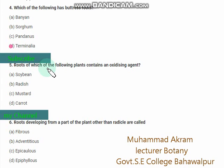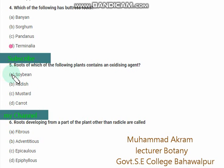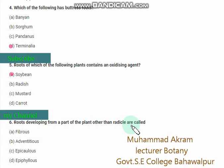Roots of which of the following plants contain an oxidizing agent? The roots of soybean contain an oxidizing agent. Roots developing from a part of a plant other than the radicle are called adventitious roots.